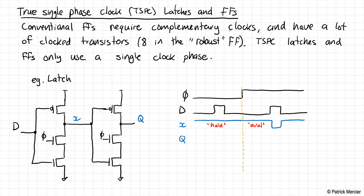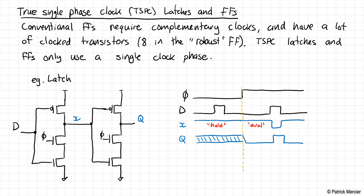Similarly for output Q: when X is high coming into the second stage, we're in hold mode, and we don't know if Q is high or low. When φ goes high, the pull-down network can turn on and the second stage acts as an inverter of X. The advantage of this circuit: only two clocked transistors — a very small number — plus only six transistors total with no extra inverters needed to generate an inverted clock. It's very compact, very low power, and popular in certain applications.